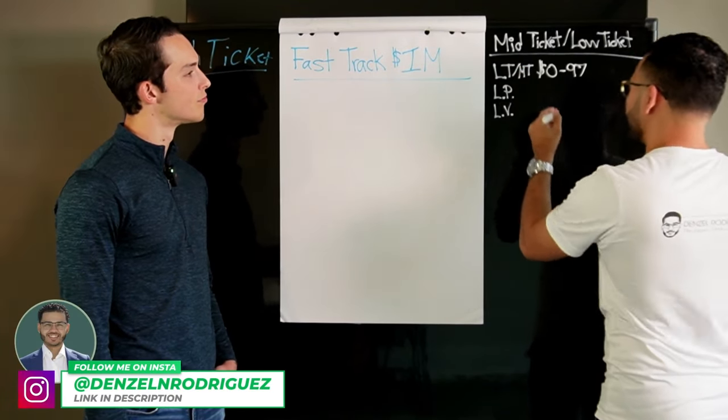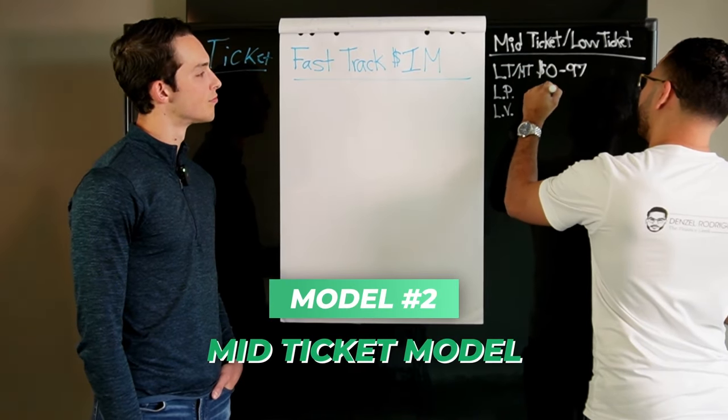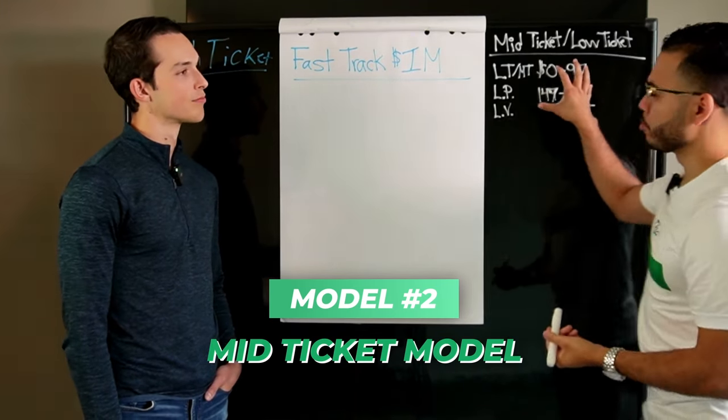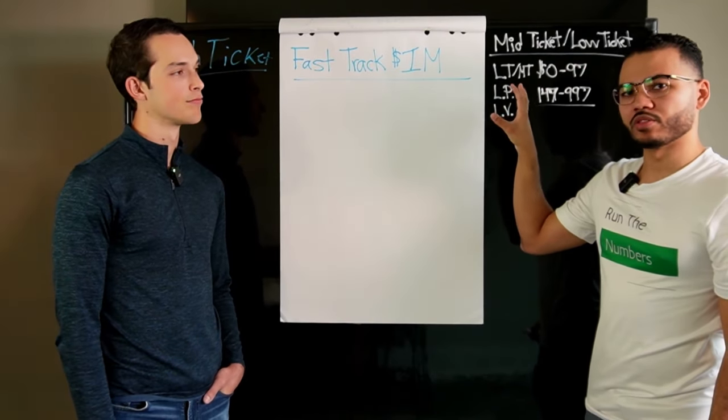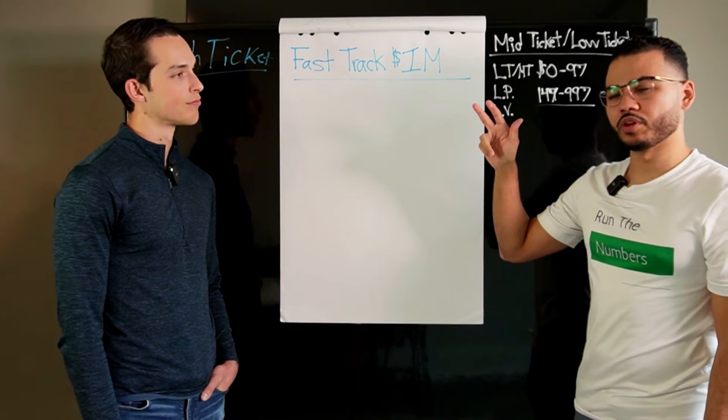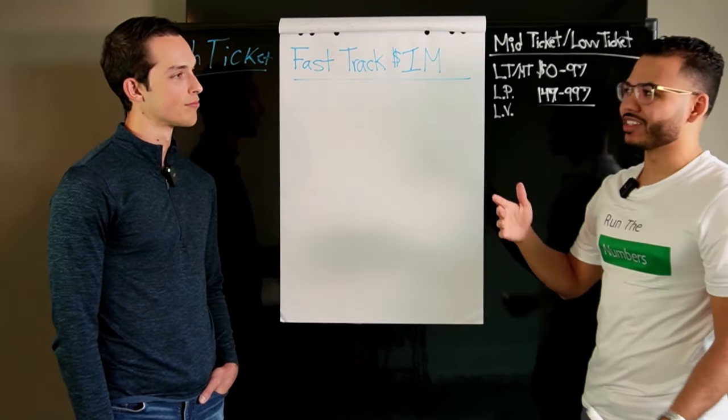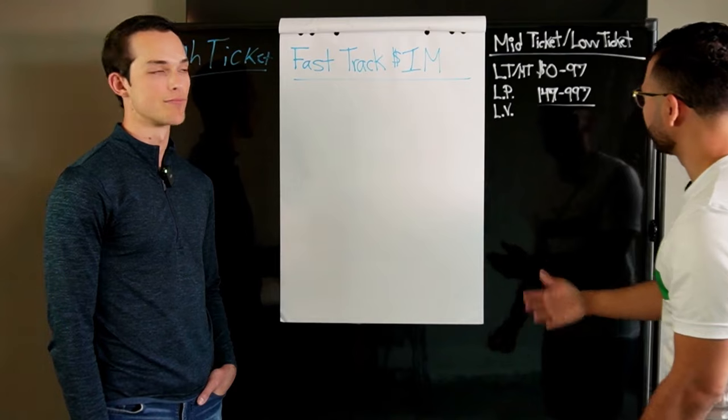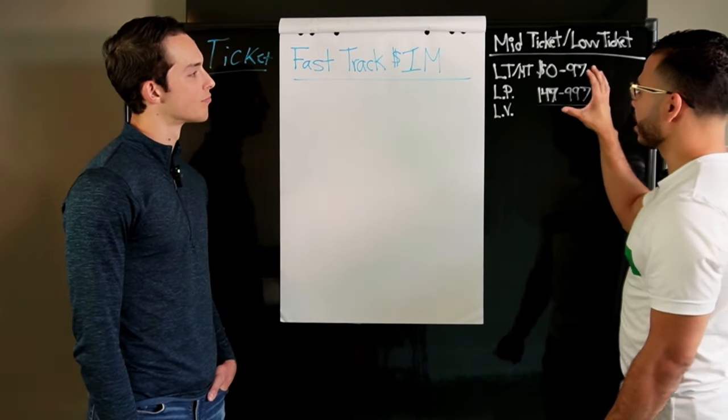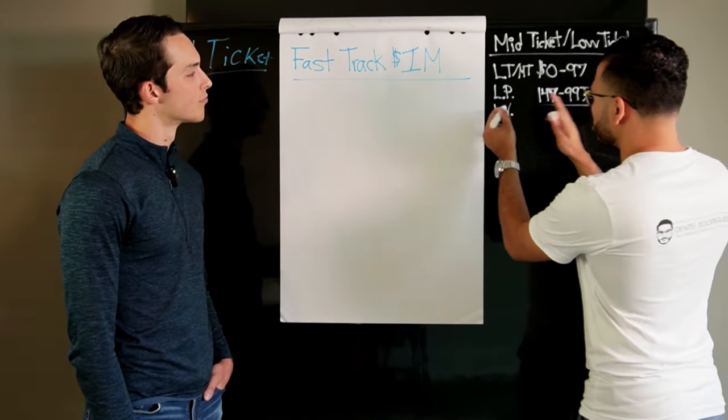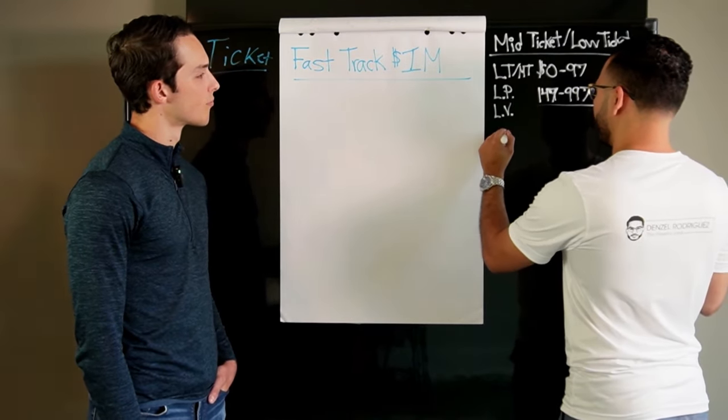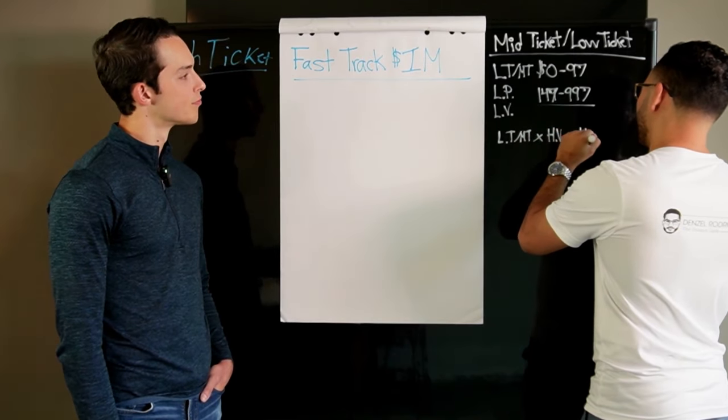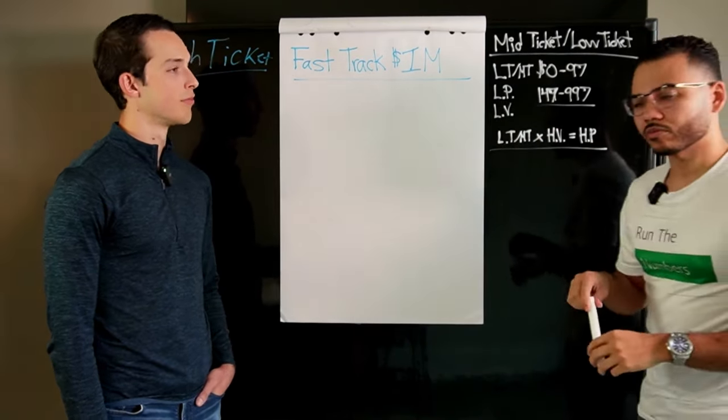That is very low ticket. And then anything I would say 147 to about 997 was mid ticket. And I was rocking at these numbers for the first year or two in my business. So what happens is once I understood the value, I had to switch it from low volume. I had to go from low ticket, mid ticket times high volume to get high profit.